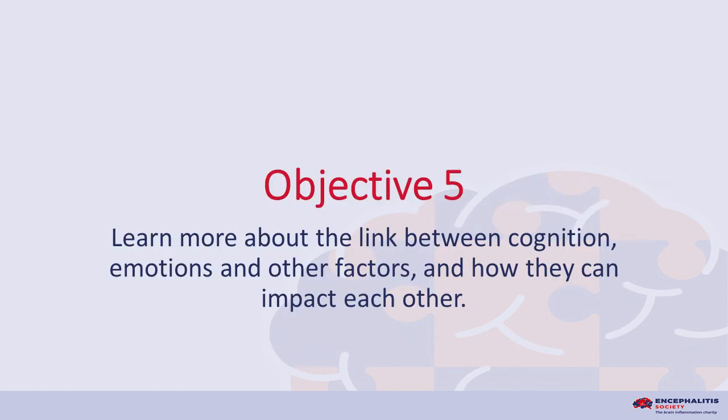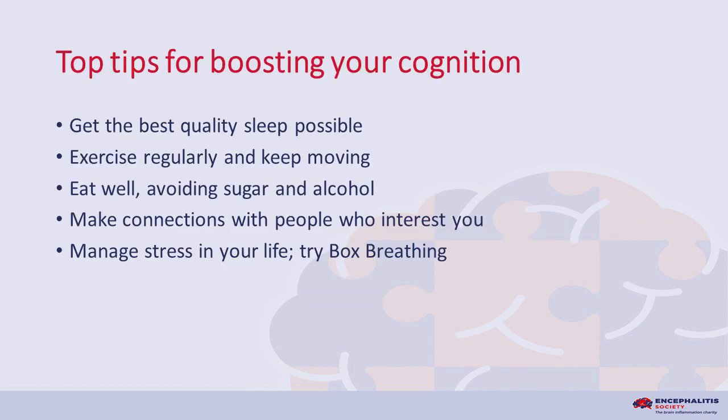Objective five: learn more about the link between cognition, emotions and other factors and how they can impact each other. Top tips for boosting your cognition: get the best quality sleep possible, exercise regularly and keep moving, eat well avoiding sugar and alcohol, make connections with people who interest you, manage stress in your life, and try box breathing.